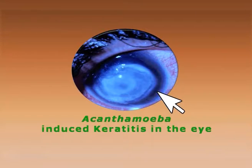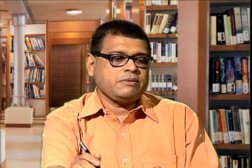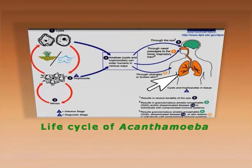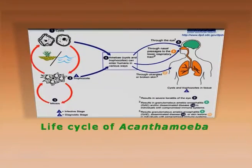The mechanism by which Acanthamoeba enters the human system involves cysts entering through the buccal cavity or nasal passage, getting into the lung, then into the bloodstream, and finally being transported to different organs including the skin, causing skin lesions. They can also cross the blood-brain barrier and induce granulomatous encephalitis in the brain.